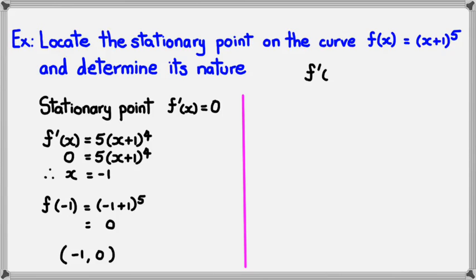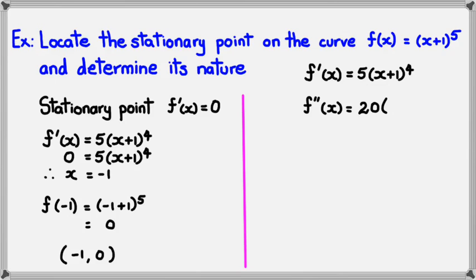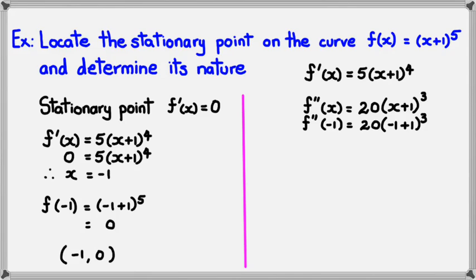So keeping that in mind, we know that f'(x) = 5(x + 1)⁴, so f''(x) = 20(x + 1)³. Now we're going to substitute −1 into f''(x). So f''(−1) = 20(−1 + 1)³.